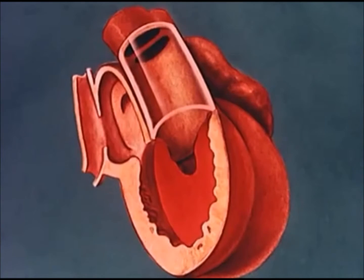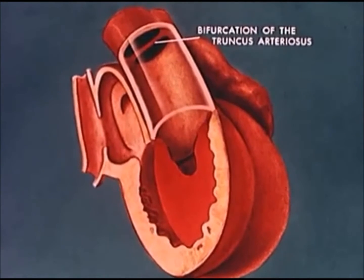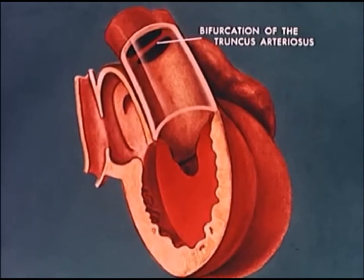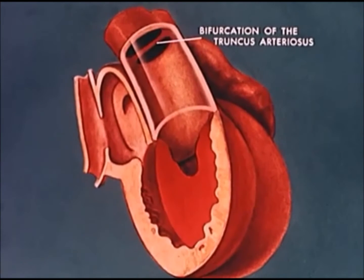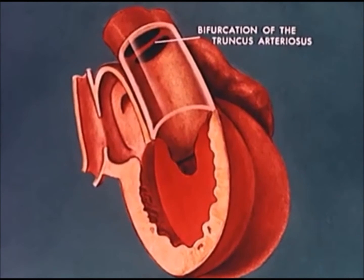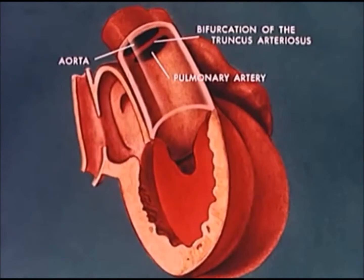The bifurcation of the truncus arteriosus, illustrated here, represents two of the aortic arches. The fourth aortic arch forms the aorta and the sixth is the origin of the pulmonary artery.